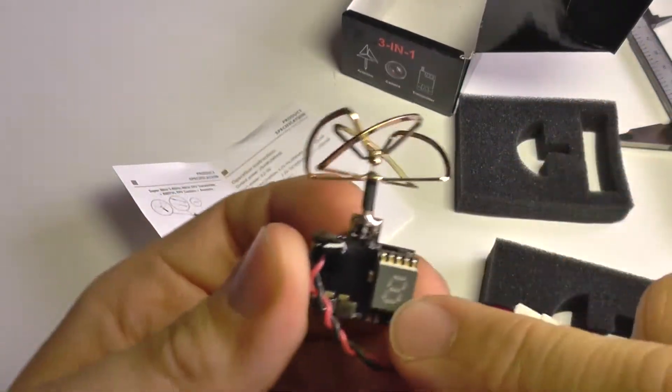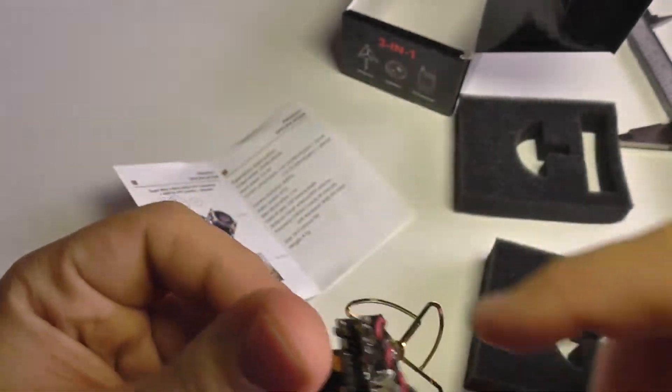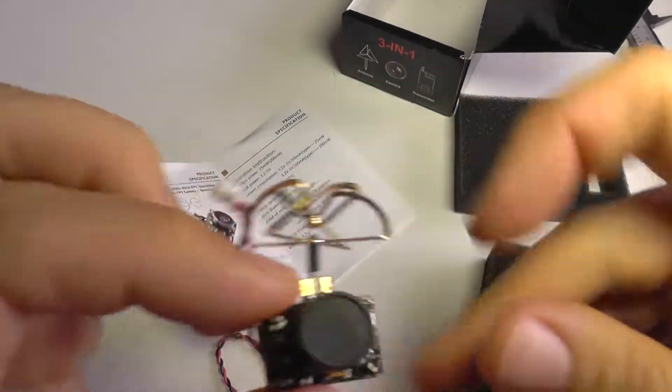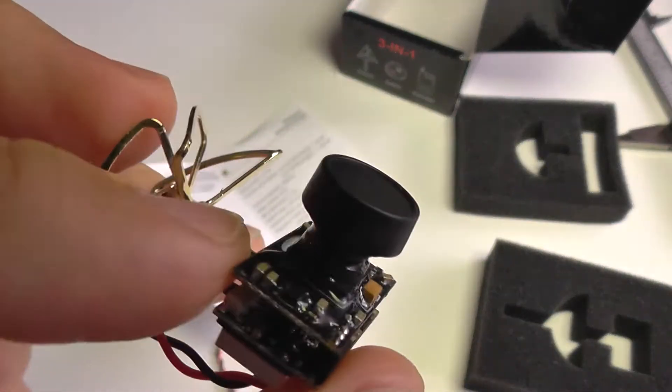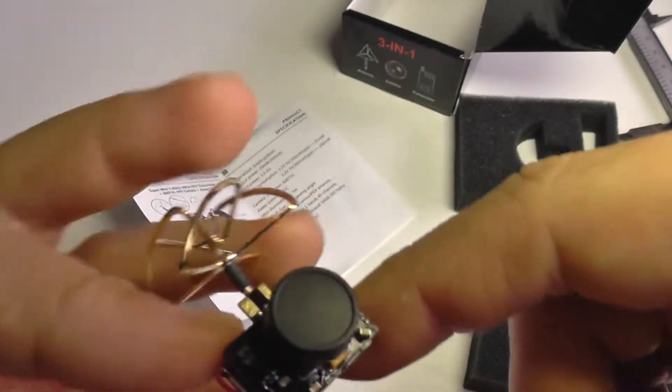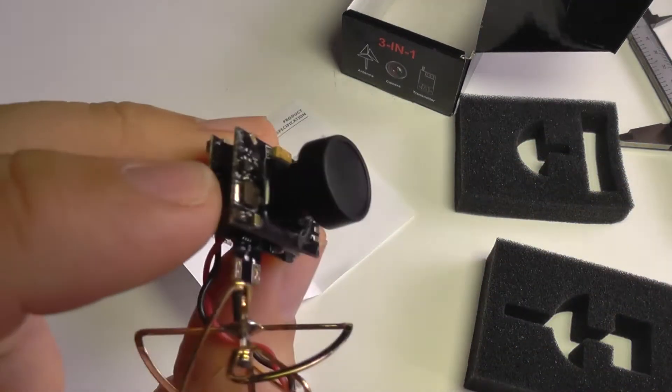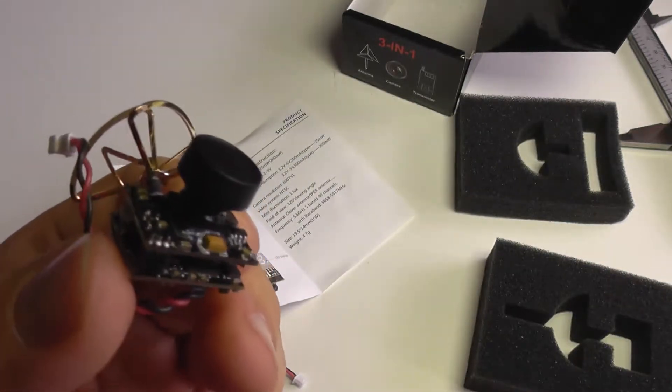It comes with a small LED display on the back to help you select the frequency, which is also nice. On the front circuit board you can see this is covered in some kind of protective gel - this increases the strength of the circuit board in case of a crash.